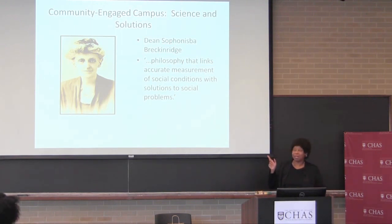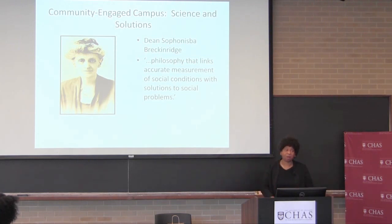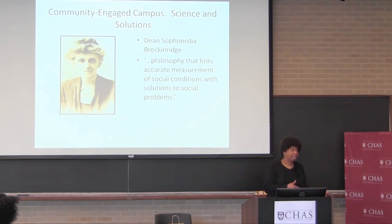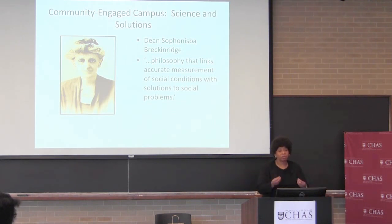This is Dean Sophonisba Breckenridge — I hope I'm pronouncing it correctly — who was the first dean of the predecessor of SSA, and also the first woman to graduate from the University of Chicago Law School. She thought very carefully that accurate measurement of social conditions with solutions needs to be linked to social problems. That doesn't happen in an ivory tower or sitting in a laboratory; it happens when you go out and talk to people, find out their challenges and concerns, but also their assets, and figure out ways to blend what you've learned in the academy in order to affect social change.